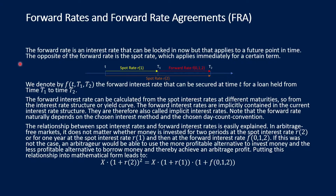A forward rate is an interest rate that can be locked in now but that applies to a future point in time. The opposite of the forward rate is the spot rate, which applies immediately for a certain term. We denote the forward rate by F with a small cap T, which denotes the point in time when the forward is agreed. T1 is the starting point at which the loan will be held, and T2 is the end point of the payback — the maturity. We agree on the forward rate in time T, but a loan is taken at time T1 to T2.